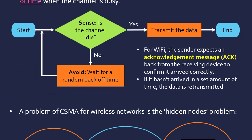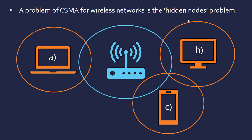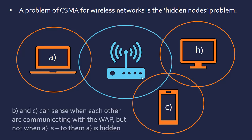In its current form, this protocol has another issue — the hidden nodes problem. We're orbiting a wireless access point providing the wireless network. Nodes C and B can both see each other and are within the same range, so they can communicate with the access point and sense when each other is communicating. But when node A is communicating, B and C have no idea, because A is not within their range. To B and C, A is hidden — and vice versa. This means when they try to sense if the channel is idle, they can't know if the other node is transmitting, and data can collide.